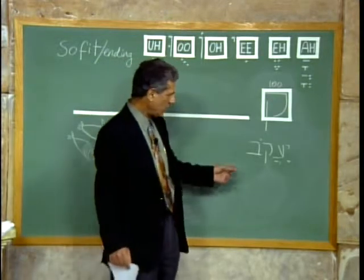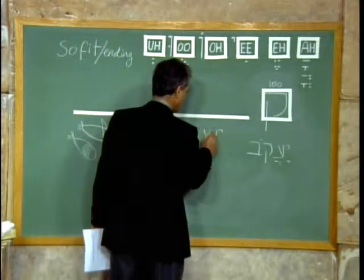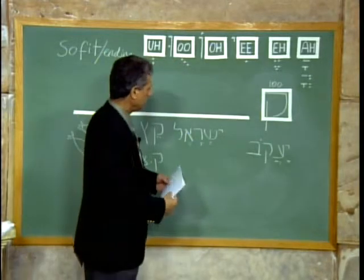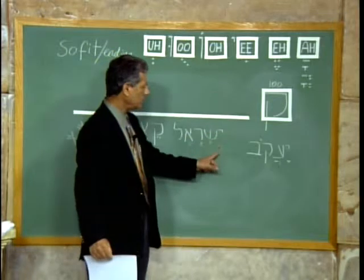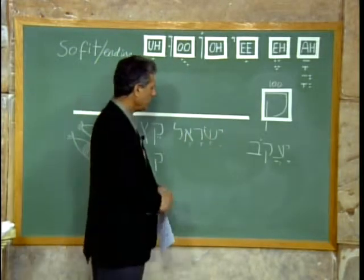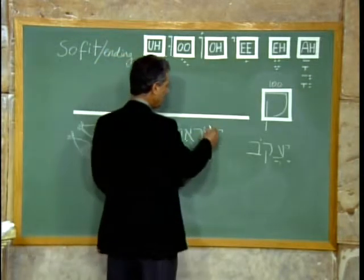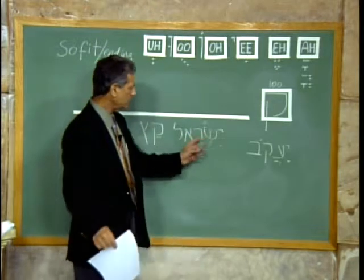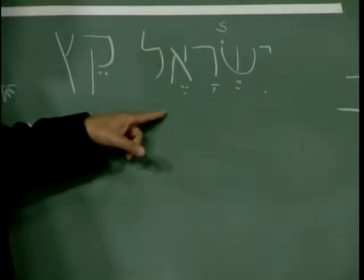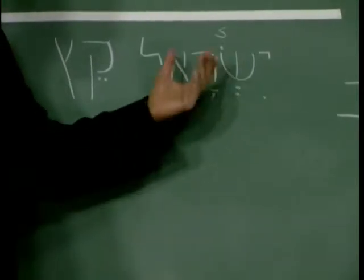We are all sons of Yaakov, whose name was changed. Here it is: Yud — Yi — then a Shin with a dot on the left side, which produces an S sound, not an SH sound — Yis. Resh with an A sound, Alef with an A sound, and Lamed — Yisrael. So God changed Yaakov's name to Yisrael, and we are all the children of Israel, the children of Yaakov.